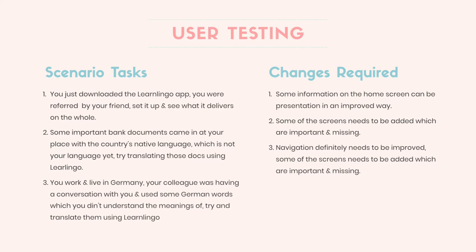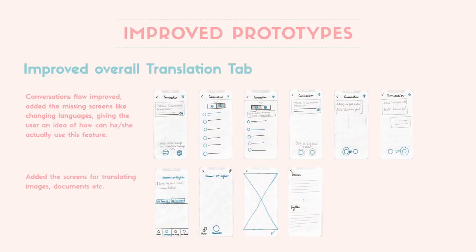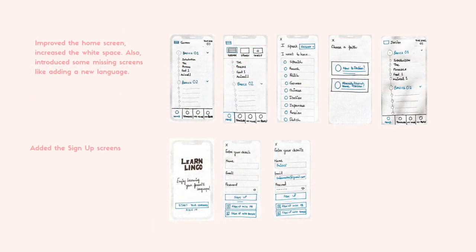These were the changes and feedback that users gave me, and accordingly I improved the prototypes. I improved the overall translation tab and conversation flow, added the screens that were missing, and also improved the home screen by increasing the white space. Some missing screens like adding a language were added. Sign-up screens were not there before — only sign-in screens — so I added those as well.